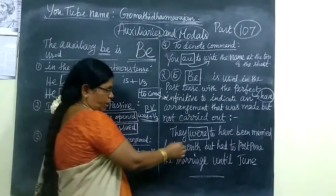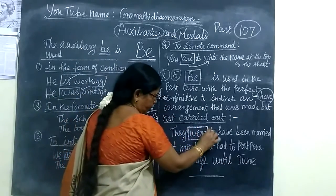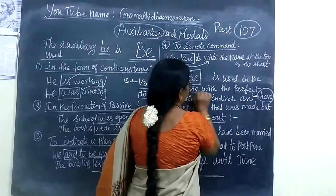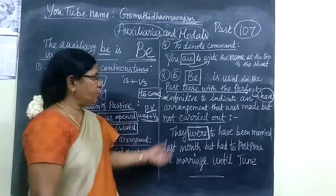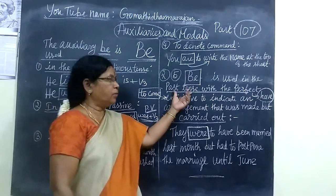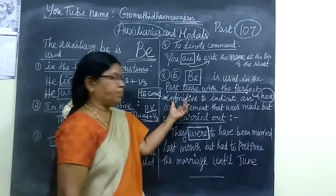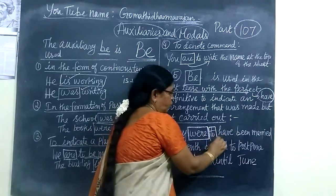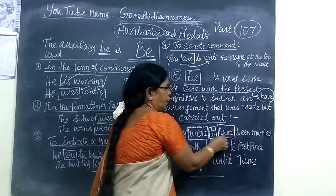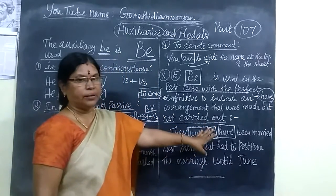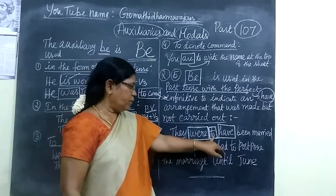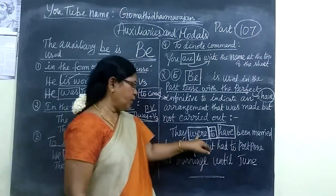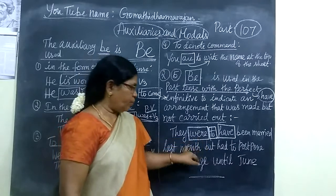In this sentence we are using the be-form with perfect infinitive. This is why we use this structure. The first sentence uses the perfect infinitive form — 'were to have been married.' When we use this structure, it is the perfect infinitive. This gives the complete meaning of an arrangement that did not happen.